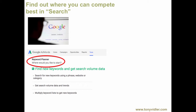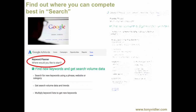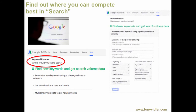The first thing you do is go into the Keyword Planner, figure out where you'd like to start, and then it comes up with a range of filters and choices for you to begin searching for the keywords, phrases, or categories that you want to be seen or compete in.